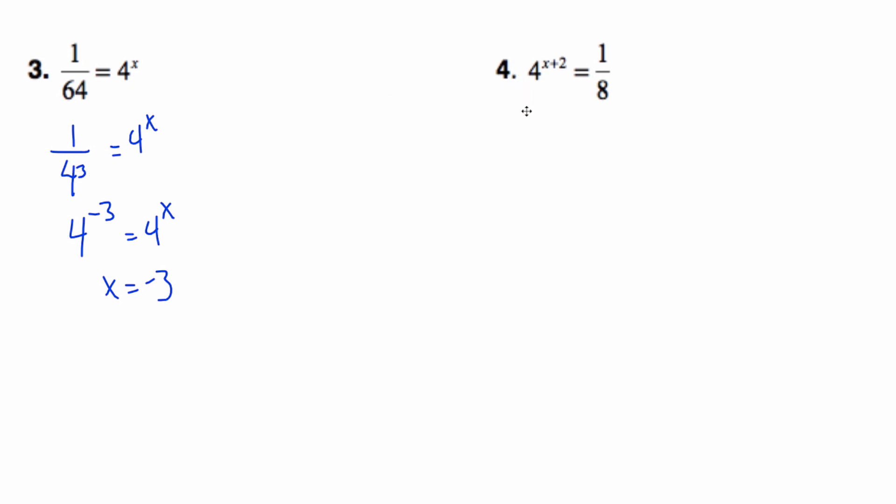Similarly, going to this one, I know 4 to the x plus 2 equals 1/8. Well, 8, I can't make 8 to any power of 4, but I can also think about these are both powers of 2. So it's 2 squared is what 4 is to the power x plus 2 is equal to 1 over 2 to the power 3. Well, if I re- Oh, positive 3. I'm going ahead of myself. Positive 3.